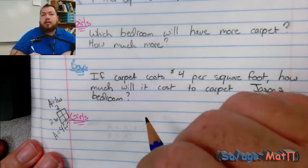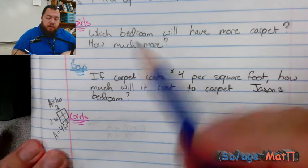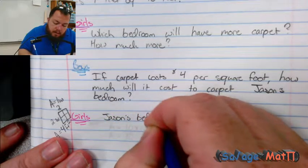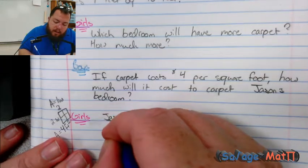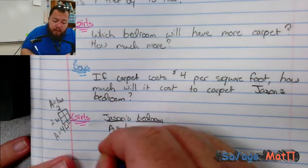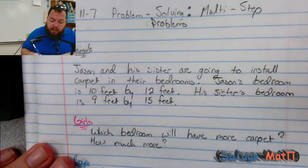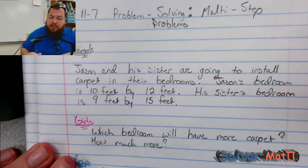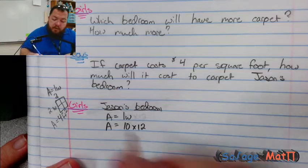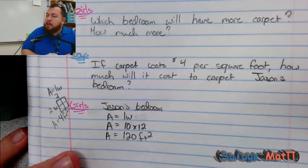So to solve for the girls' question — which bedroom will have more carpet and how much more — the first thing we have to solve is how much carpet does Jason's bedroom need. Area equals length times width. Jason's bedroom was 10 feet by 12 feet, so area equals 10 times 12, which is 120. The area of Jason's bedroom is 120 feet squared.